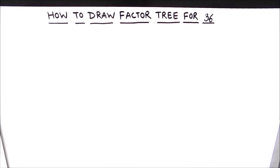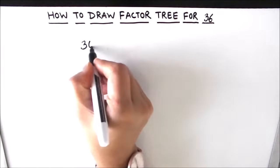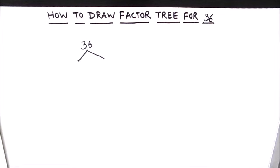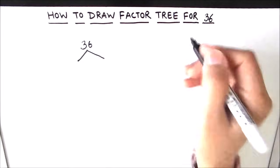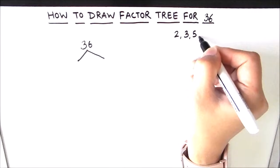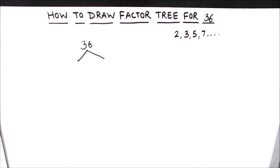Hello students, in this video we are going to learn how to draw a factor tree for number 36. For making the factor tree for number 36, we are going to write the number and make two branches from it. In these two branches we are going to write the factors of number 36. To find the factors, we are going to use prime numbers: 2, 3, 5, 7, and so on.